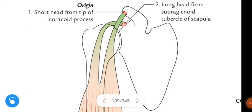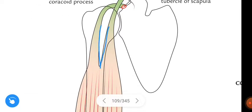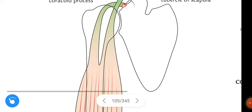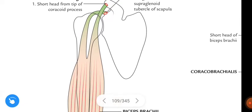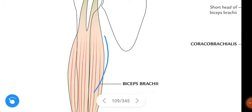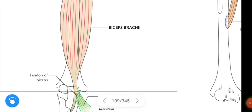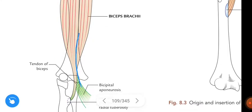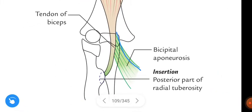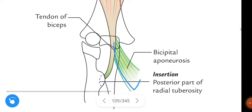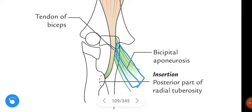These two heads of the biceps brachii unite in the distal one-third of the arm and form a belly. This belly gives off the bicipital aponeurosis at the medial aspect, opposite the bend of the elbow.